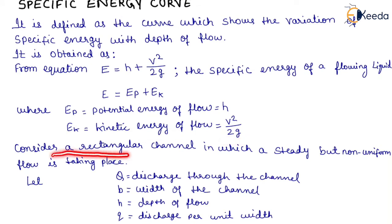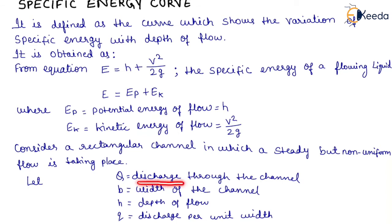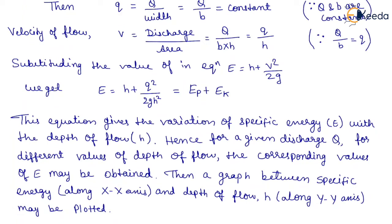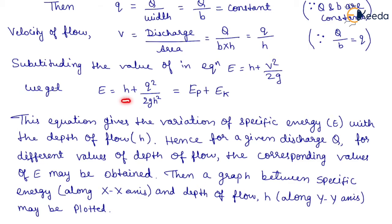Consider a rectangular channel in which a steady but non-uniform flow is taking place. Let Q be the discharge through the channel, B the width of the channel, H the depth of flow, and small q the discharge per unit width. Then q equals Q by B, which is a constant. Therefore, velocity V equals Q upon area equals Q upon (B × H) equals q by H. Substituting, E equals H plus q² upon 2GH², which equals EP plus EK. This equation gives the variation of specific energy E with depth of flow H.